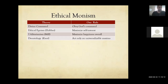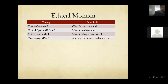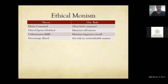Deontology is going to say: act only on universalizable maxims. That's the rule you should follow. What does that mean — act only on universalizable maxims? How do you follow that rule? Let's break it down: what does Kant mean by universalizable maxims?